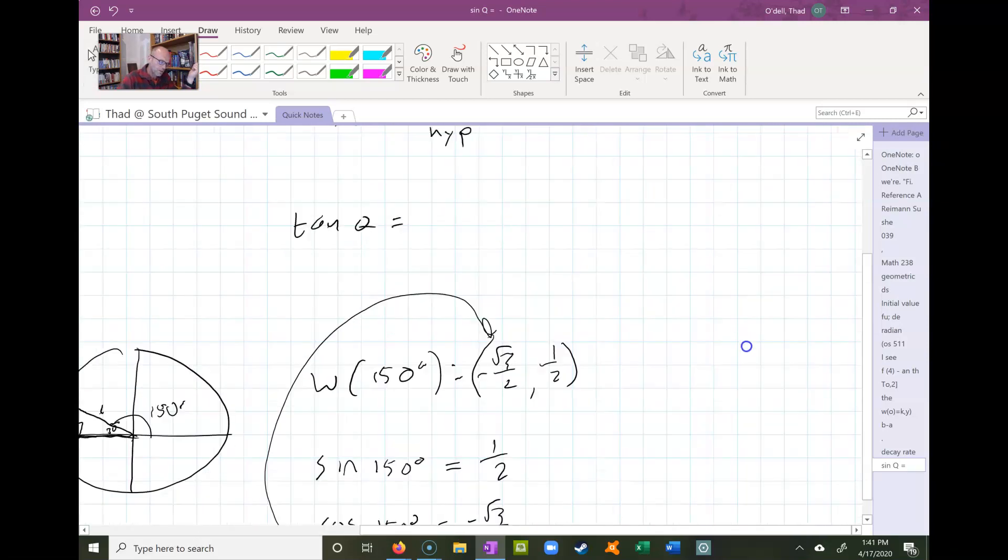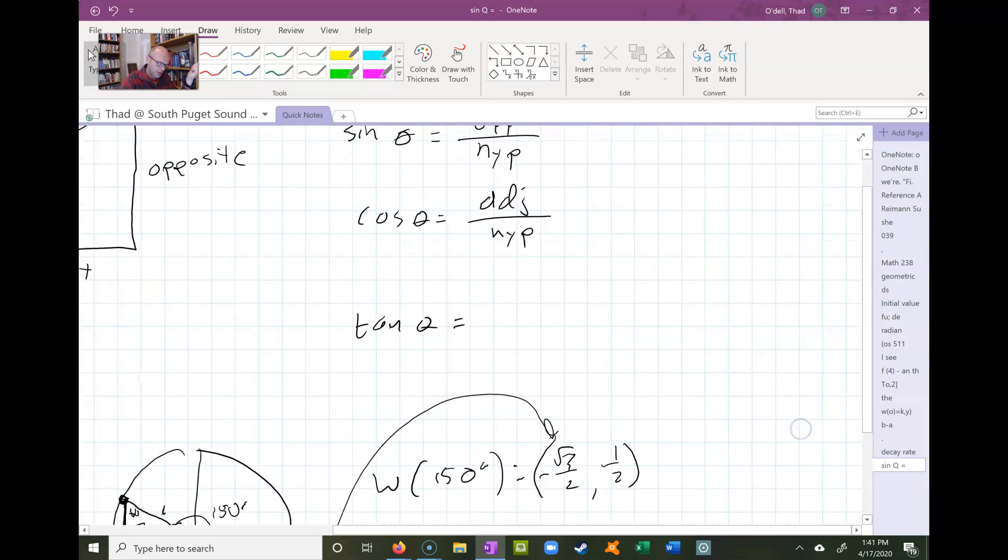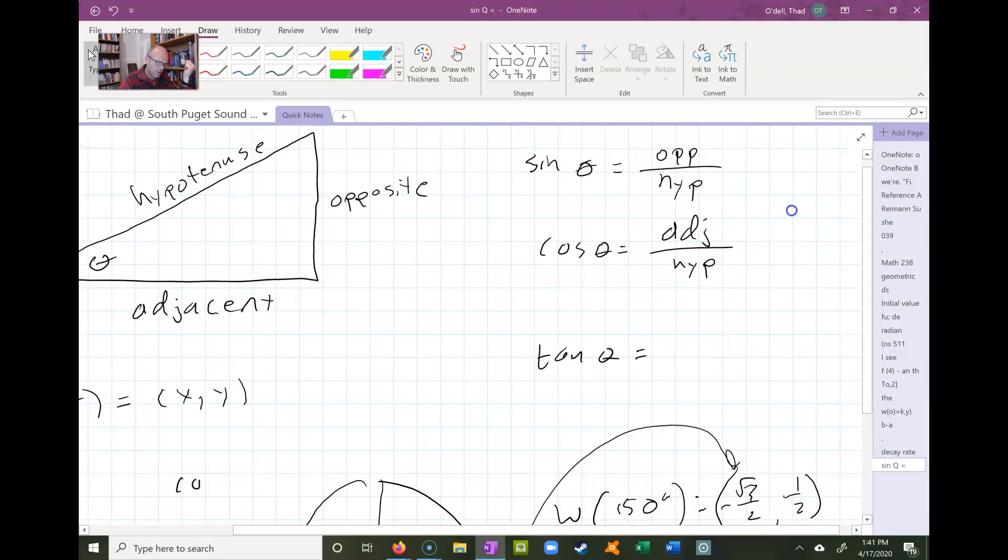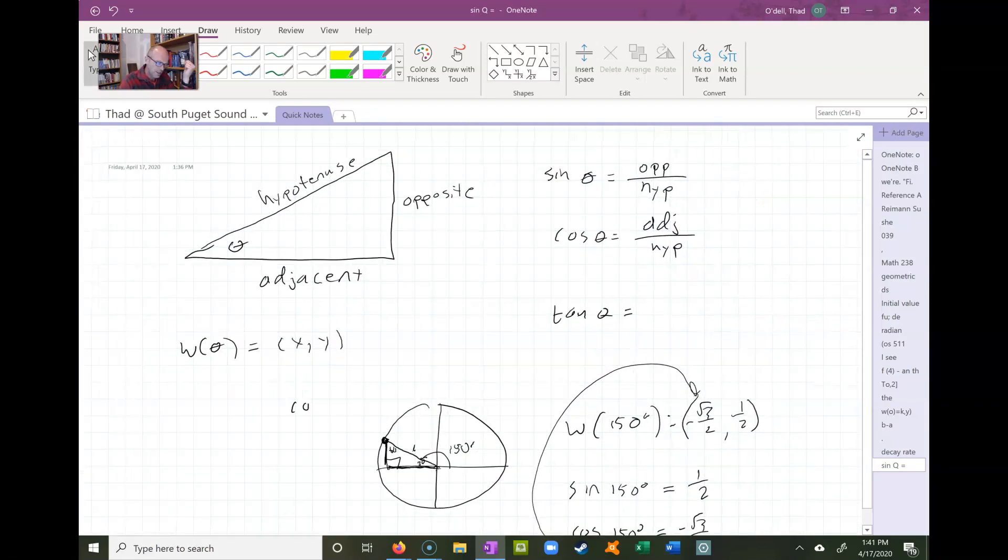So one other piece we want to add to that is the tangent function. Tangent is just another ratio in right triangles. The tangent happens to be the opposite leg over the adjacent leg.